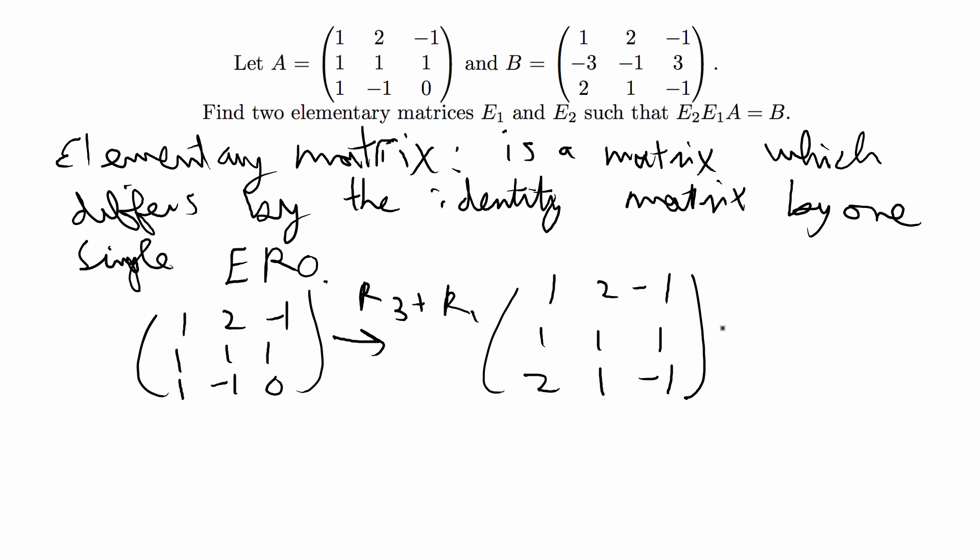Then the second elementary row operation I do is R2 minus 2R3, and that gives 1, 2, negative 1, negative 3, negative 1, 3, 2, 1, negative 1. So that's A and that is B.